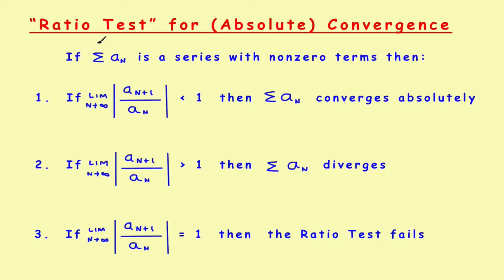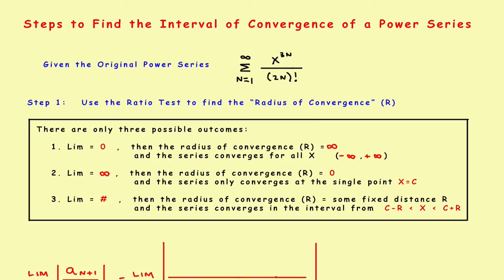What the ratio test says is this: if you have a series with non-zero terms and you find this limit and the limit is less than 1, then the series converges. If the limit is greater than 1, the series diverges. And if the limit equals 1, the ratio test fails and you'd have to use some other test. Primarily, we're concerned with the first case — we want to find where the limit is less than 1, because that's where the series converges.